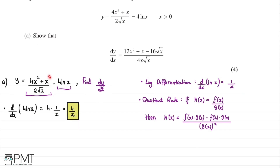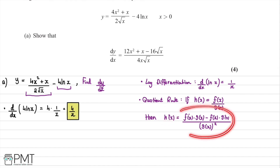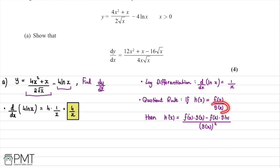Now we want to differentiate the fraction part. Since we have a fraction, we're going to use the quotient rule. The quotient rule states that if h(x) = f(x)/g(x), then the derivative of h(x) equals f'(x)·g(x) − f(x)·g'(x), all divided by g(x) squared.